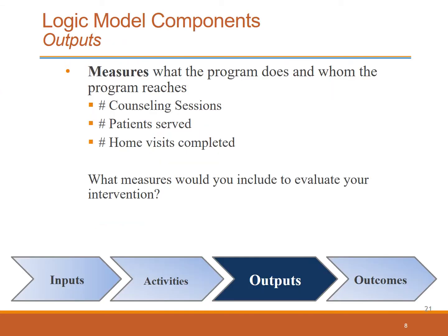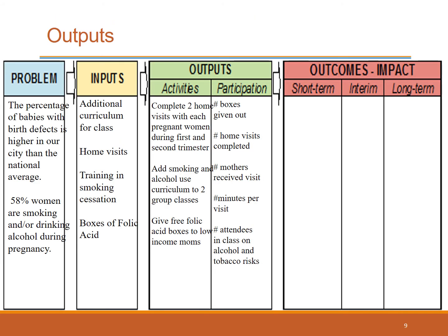In the output section, we include measures of what the program does and whom the program reaches, such as the number of counseling sessions, the number of patients served, and the number of home visits. Consider what measures you would include to evaluate your intervention. Here are a few examples: the number of folic acid boxes, home visits, mothers receiving visits, the duration of the visit, and others are possible ways to measure the execution of your program.